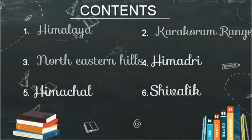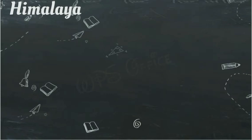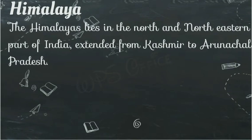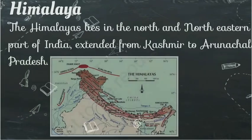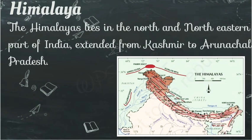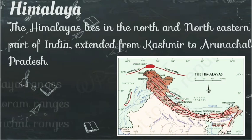Let's start from Himalaya — Northern Himalaya, which has 3 ranges. The Himalayan range lies in the north and northeast part of India. It is extended from Kashmir to Arunachal Pradesh. As you can see, it goes from Kashmir to Arunachal Pradesh. The Northern Himalaya has 3 ranges.